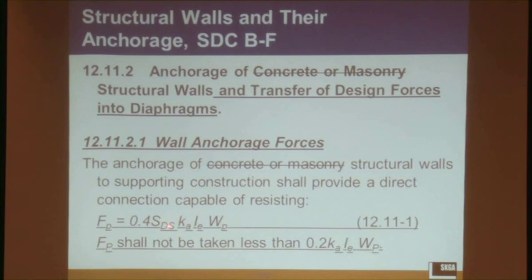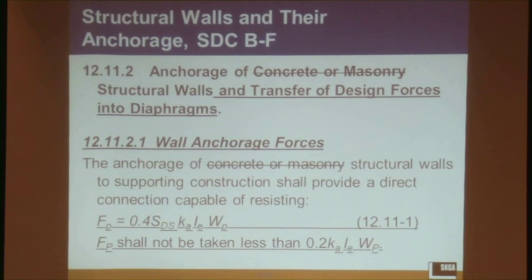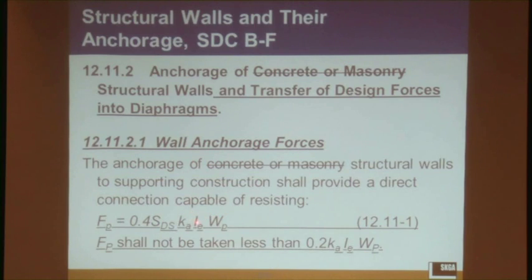The equation is a function of the design short period spectral response acceleration. S sub DS is a good estimate of the peak ground acceleration at the base of the structure — Dr. Ghosh mentioned that a little bit earlier — so this is the ground motion at the base of the structure. Then we have the amplification coefficient for flexible diaphragms, K sub A. Then we multiply by the importance factor of the structure, and we now have a subscript E added to the importance factor.